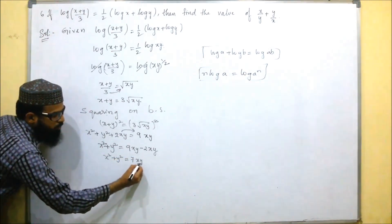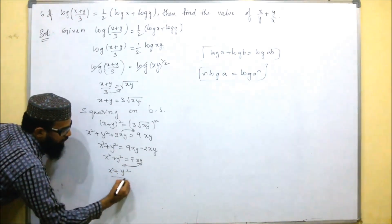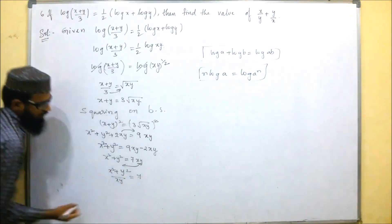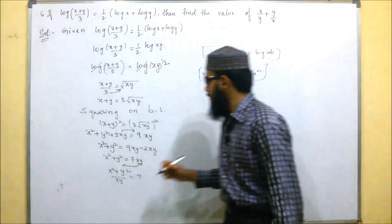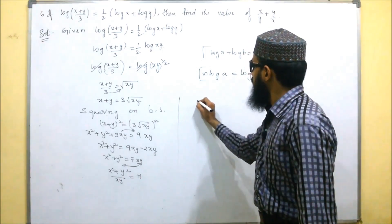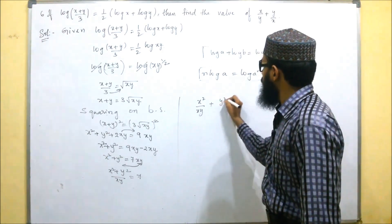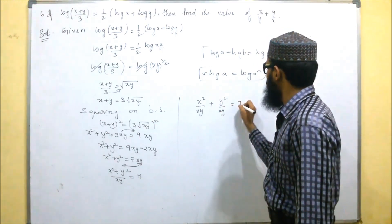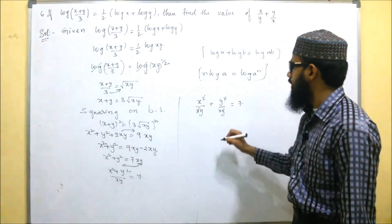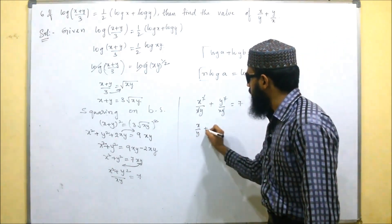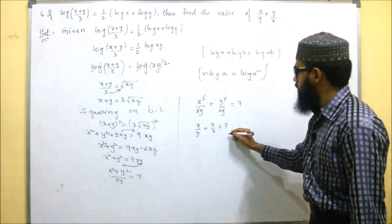Dividing both sides by xy: (x² + y²)/xy = 7. Splitting the left side: x²/xy + y²/xy = 7, which simplifies to x/y + y/x = 7. So the value of x/y + y/x is 7.